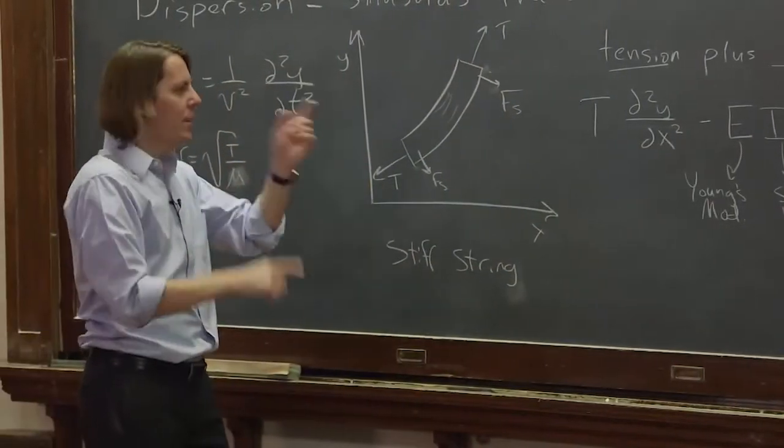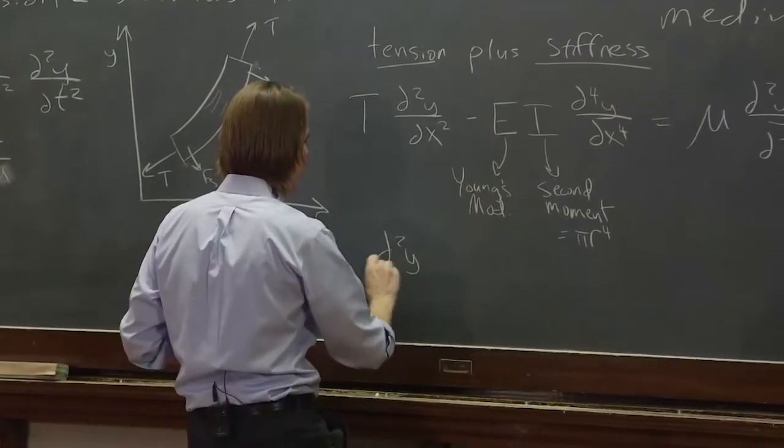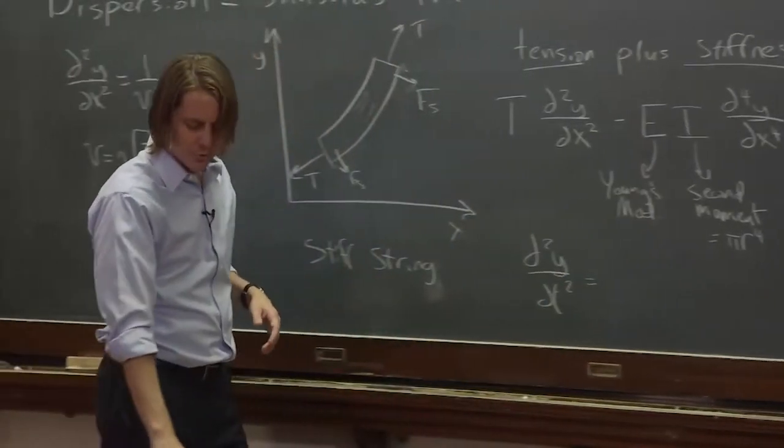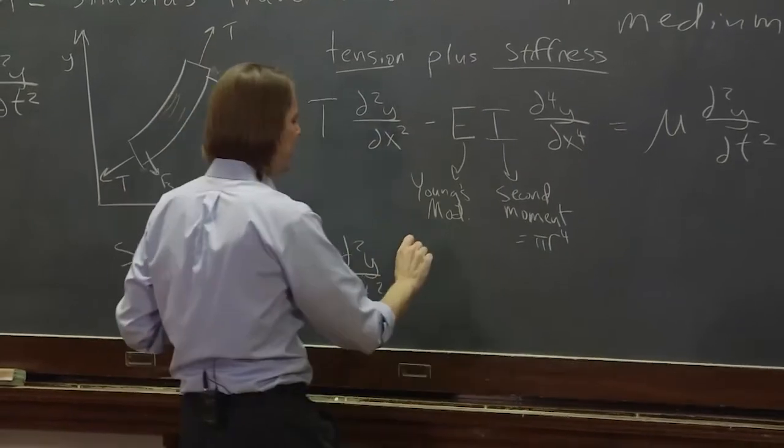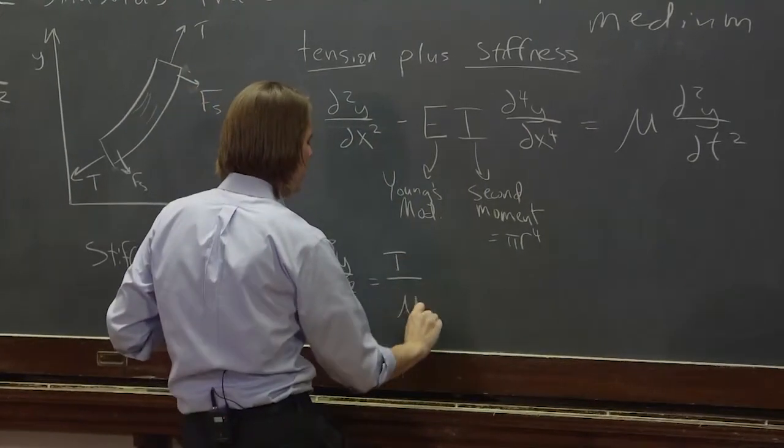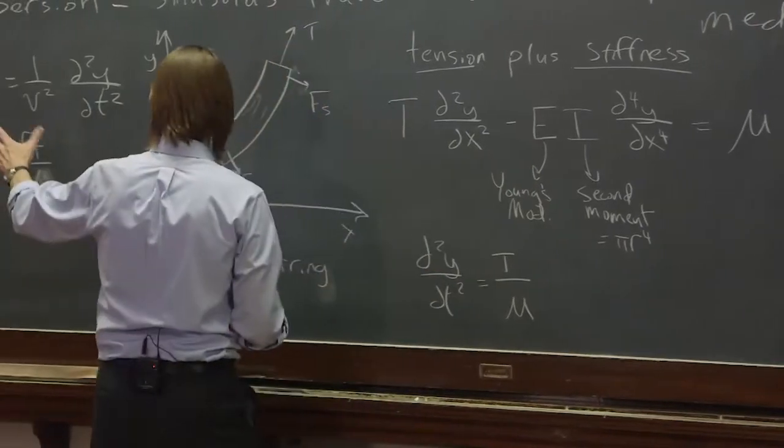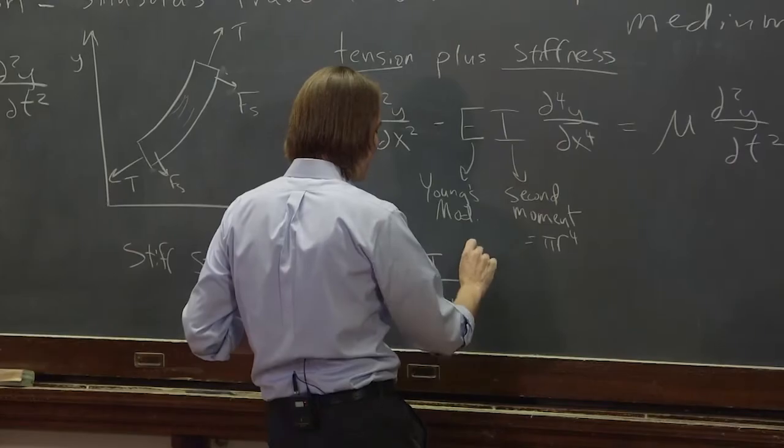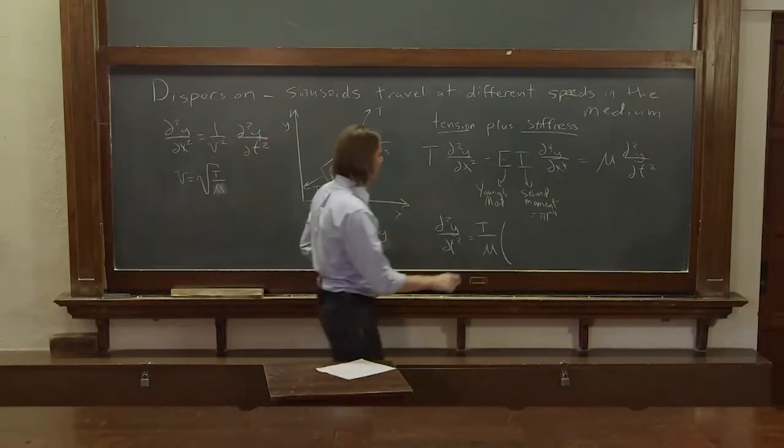So we can rearrange a little bit. Let's get d²y/dt² by itself on this side equals, and let's pull out. So the μ is going to come under and we're going to pull out a tension over μ because that's v². That's the v from back when we had a nice constant velocity. And that is going to be times d²y/dx².